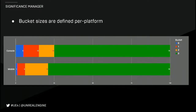We can make the different-sized buckets different per platform. On consoles, the current setup has five players in the highest quality bucket, then 10, 10, and the remaining 75 in the lowest quality. But on mobile, only one player is in the highest quality — that's you, the player you can see — and then we start to drop off more aggressively because we just don't have the same CPU resources.